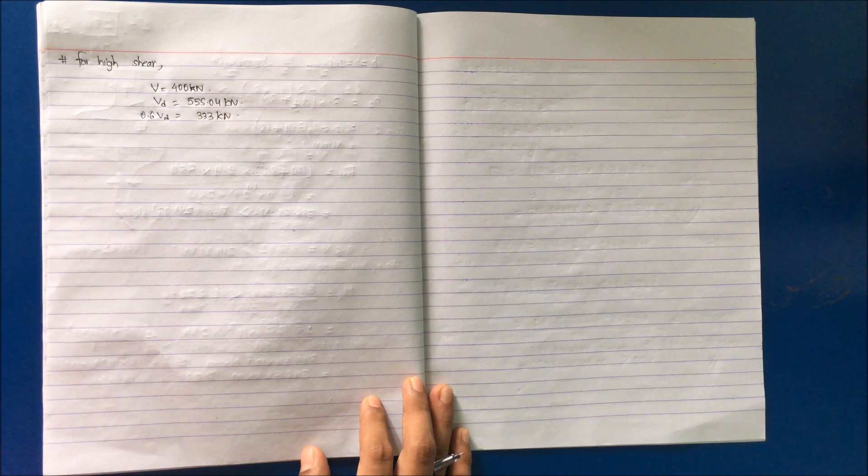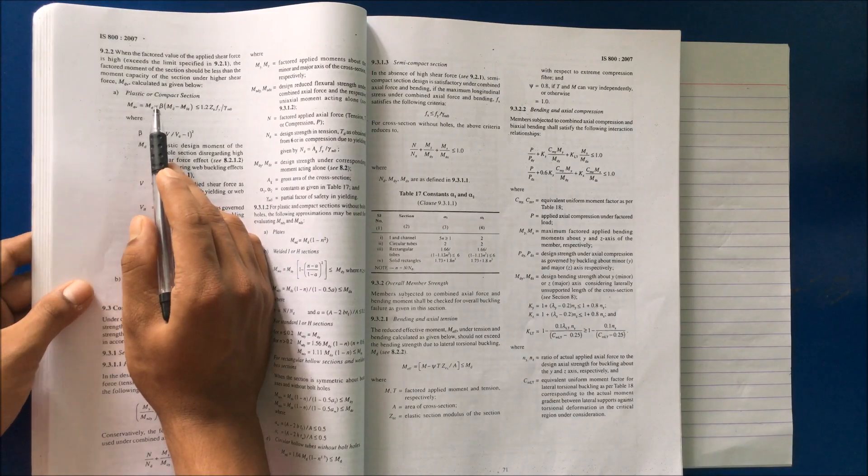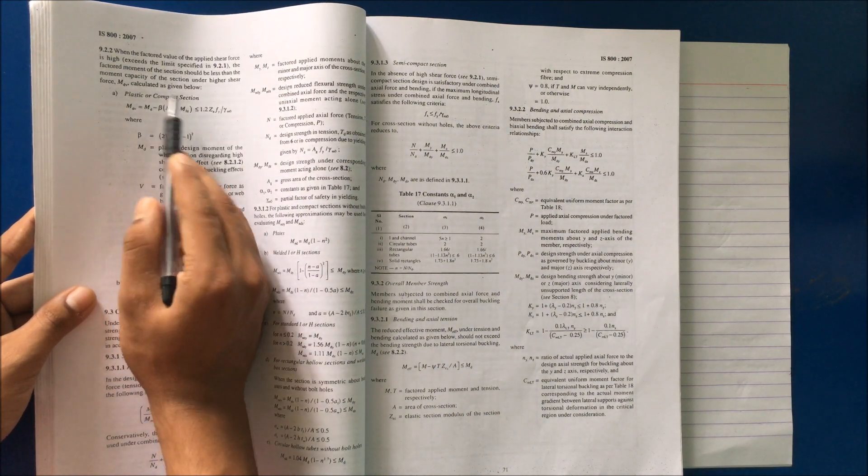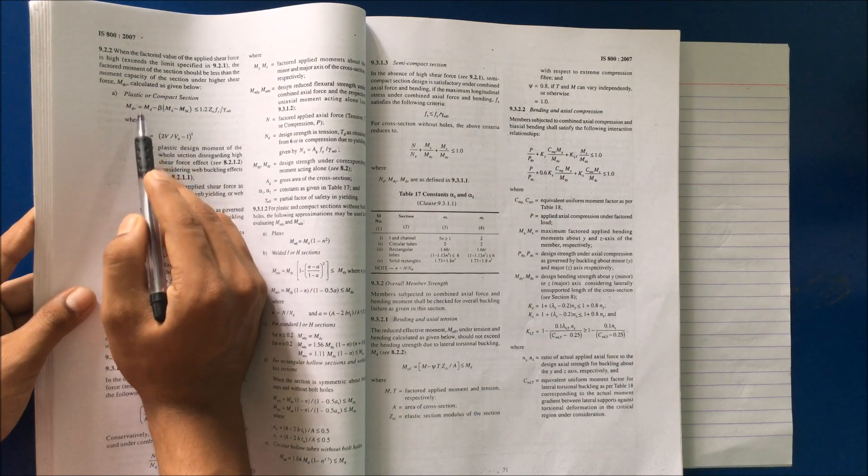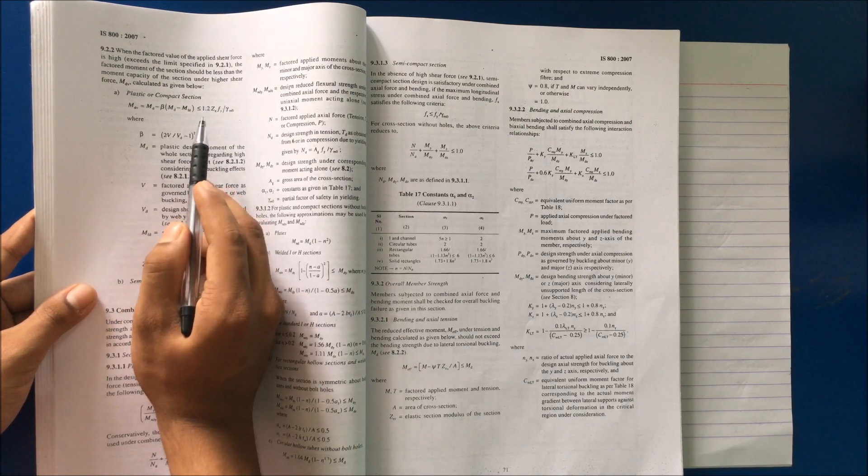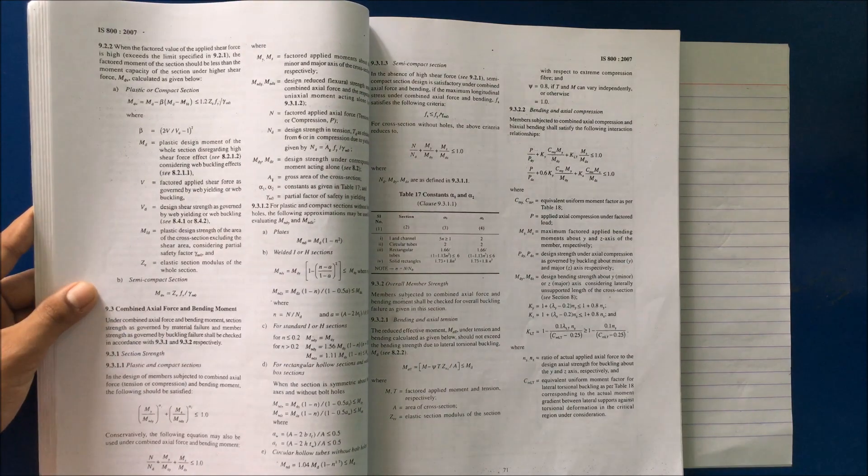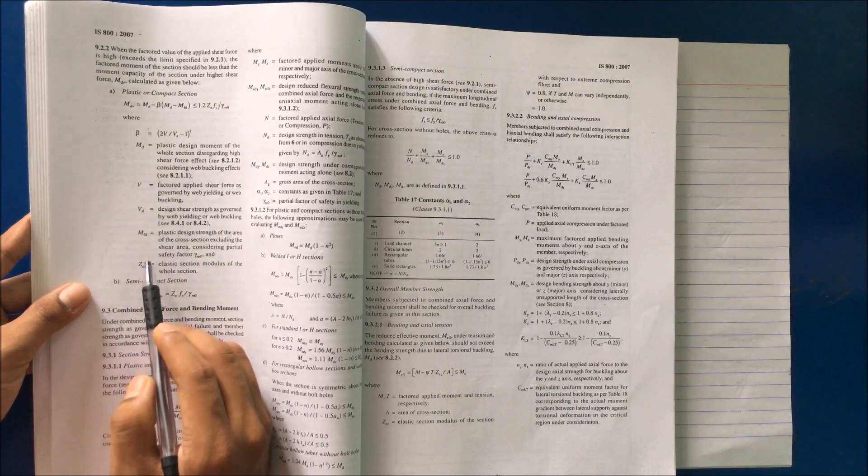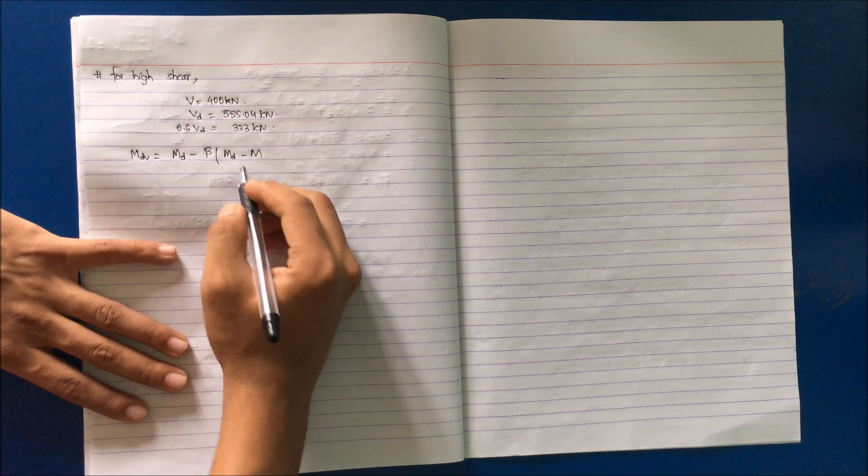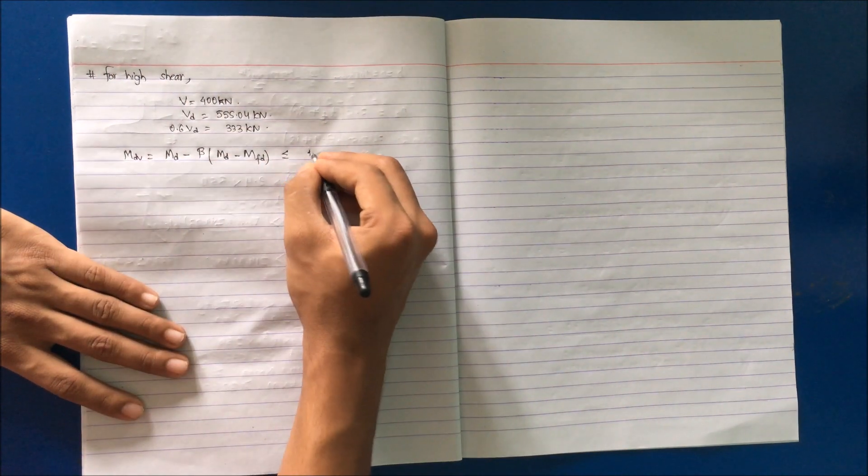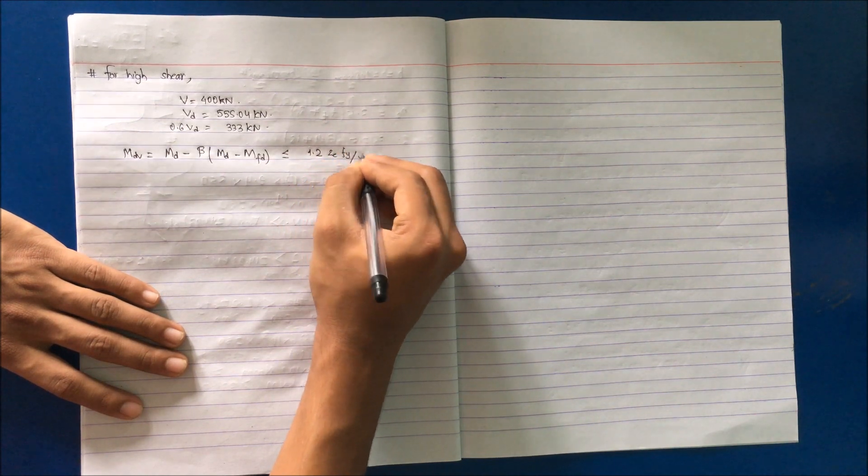Go to page number 70. For plastic section, MDV, that is design moment capacity under high shear force, is calculated as: beta (MD minus MFD) should be less than or equal to 1.2 Ze fy / gamma m0. So these are the terms: beta, MD, V, Vd, MFD, Ze. I am writing the formula from the code, so you don't have to remember it.